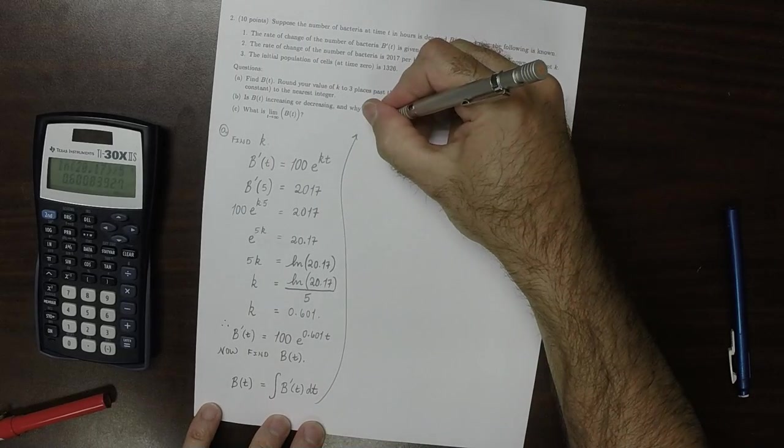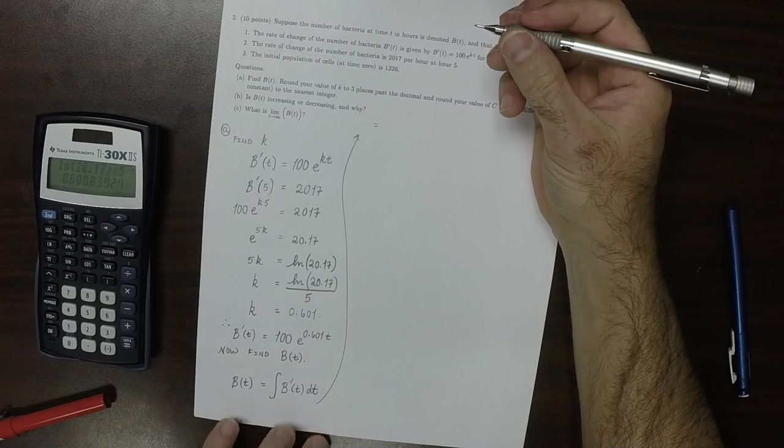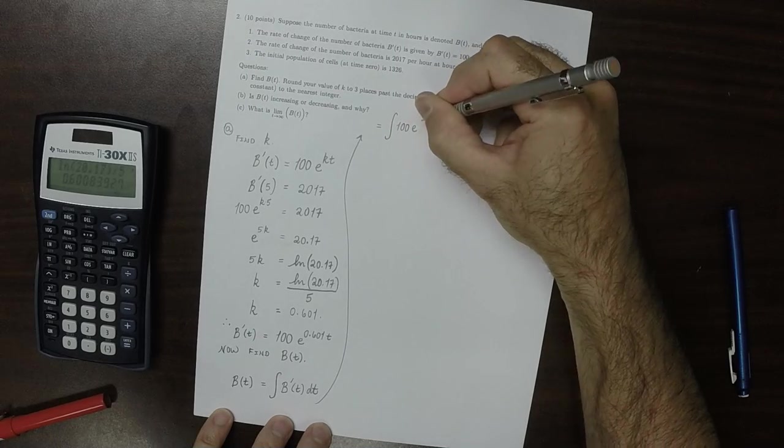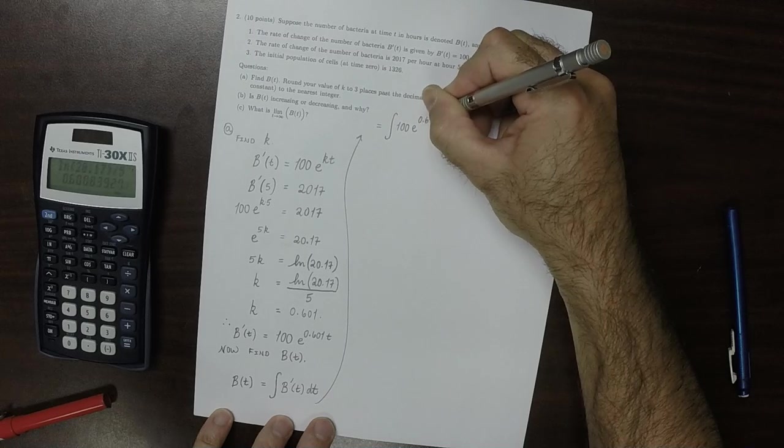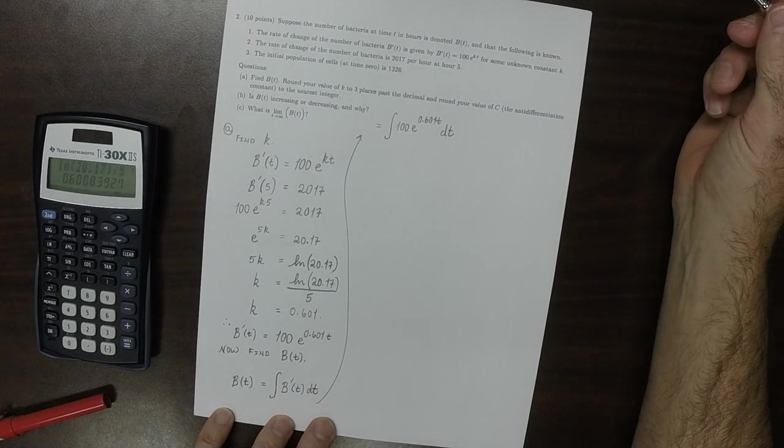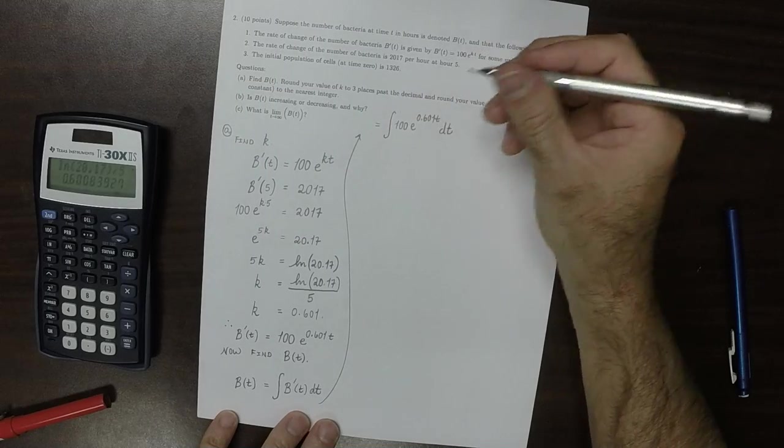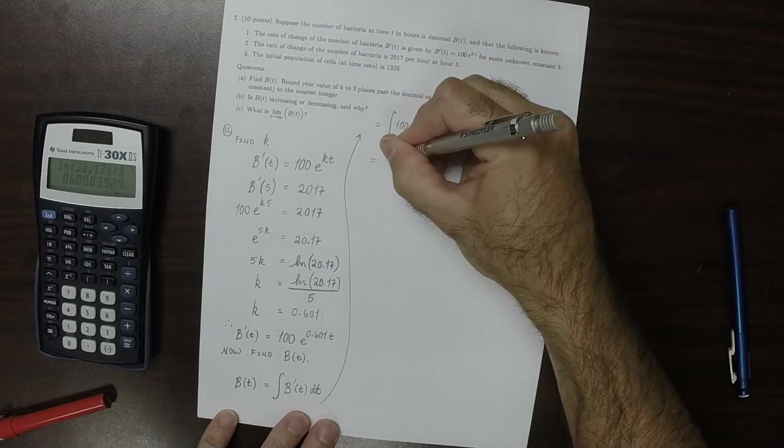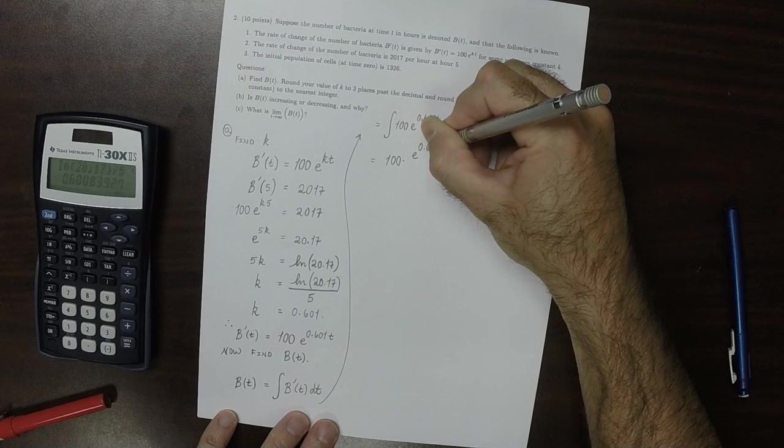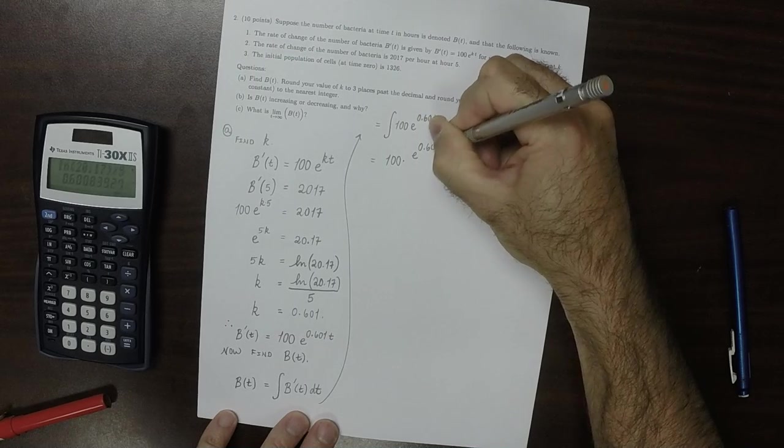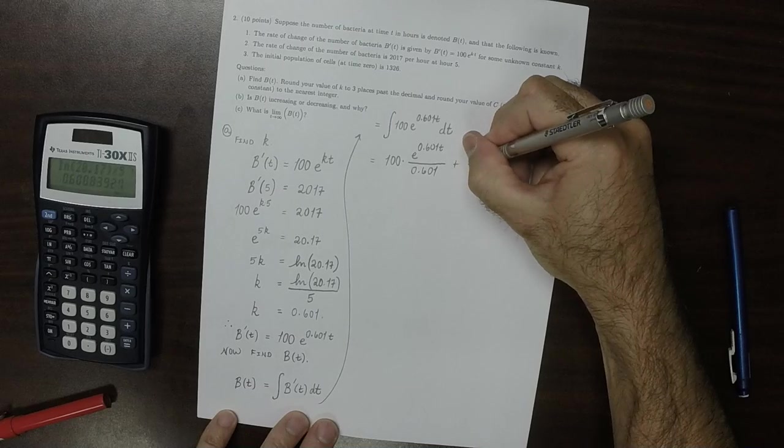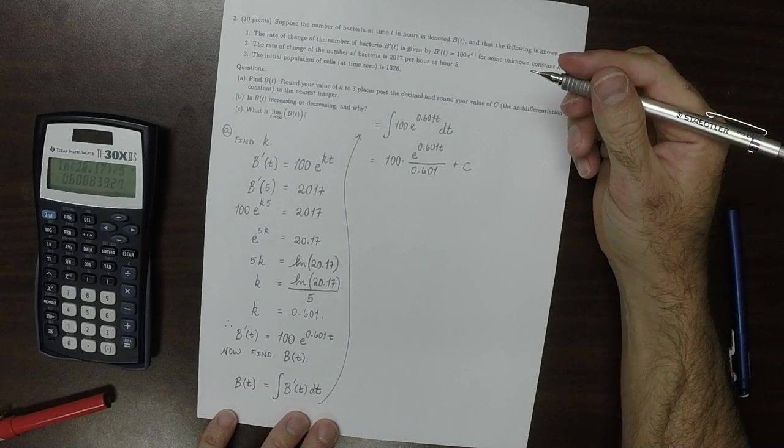Well, b(t) is the antiderivative of the derivative of b(t). So that's equal to the antiderivative of 100 exponential of 0.601t dt. And that's one of the antiderivative that you're expected to memorize. So that 100 is just a constant multiple, so it just hangs out. 100 times exponential of 0.601t and then divided by 0.601 plus a constant.